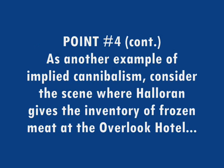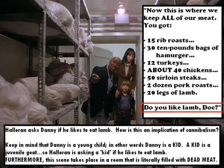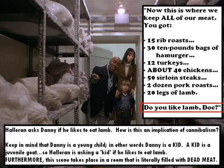Moving on to another example of implied cannibalism — consider the scene where Dick Halloran gives the inventory of frozen meat at the Overlook Hotel. After giving the inventory, he turns and asks Danny, 'Do you like lamb, Doc?' How is this implied cannibalism? Danny is a young child — you could say he's a 'kid.' One definition of 'kid' is 'juvenile goat.' So Halloran is asking a kid — a young goat — if he likes to eat lamb, which one could argue is an example of cannibalism. Furthermore, Halloran asks Danny this question while literally surrounded by dead meat.